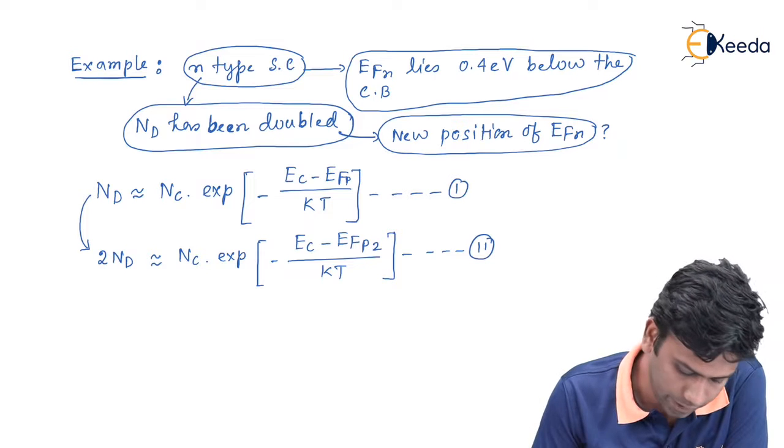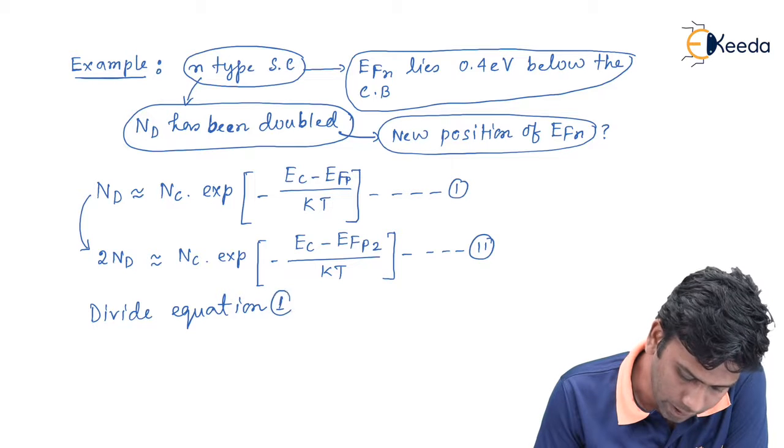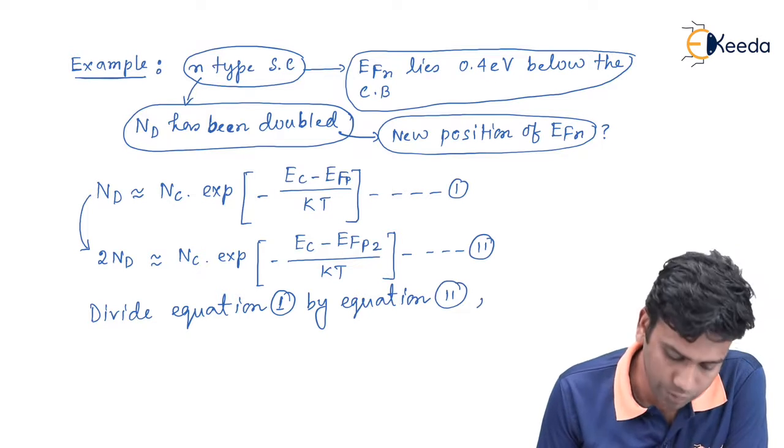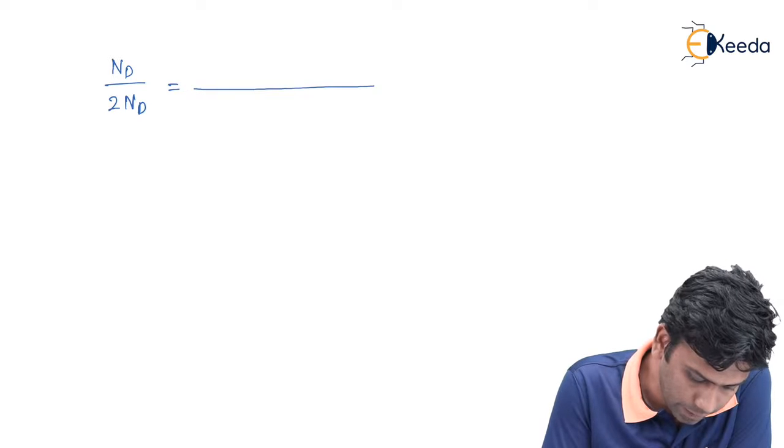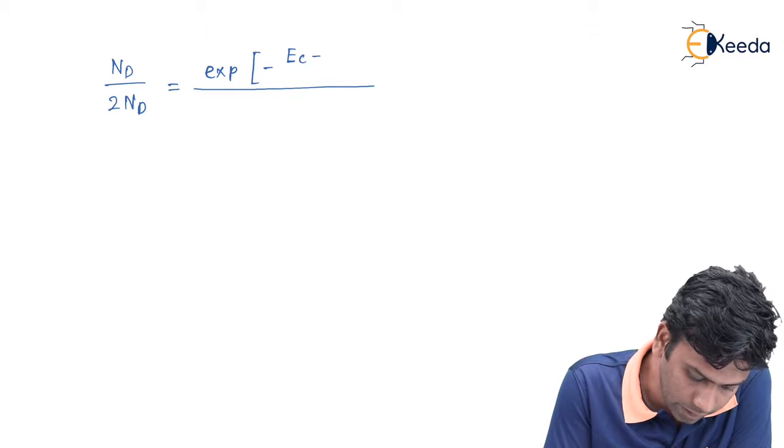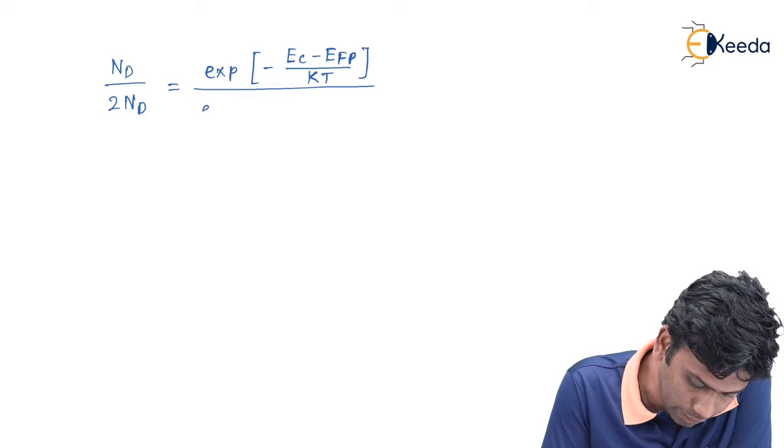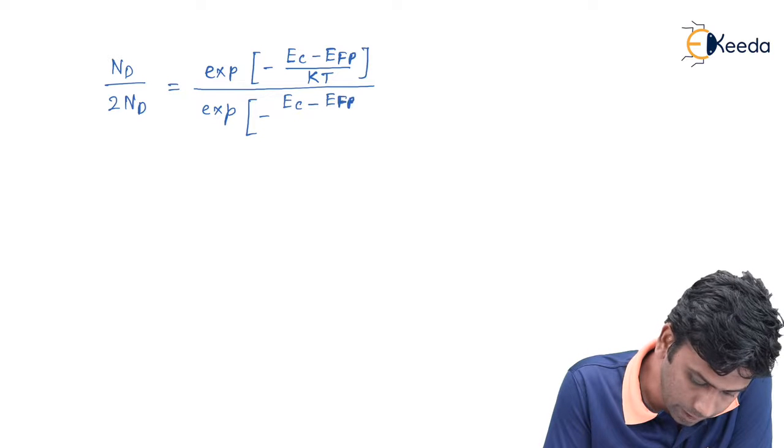So let us divide equation 1 by equation 2. Hence we will get Nd by 2Nd equals exponential minus Ec minus EFP divided by KT in the numerator, and in the denominator it will be exponential minus Ec minus EFP2 divided by KT.